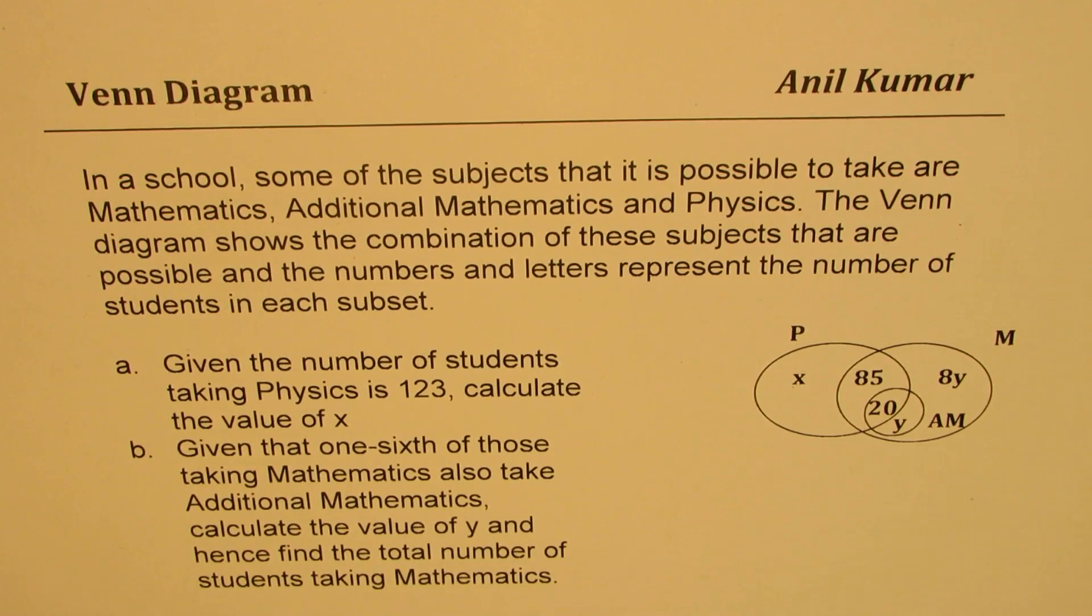So that's the Venn Diagram. Given the number of students taking physics is 123, calculate the value of X, that means only physics.